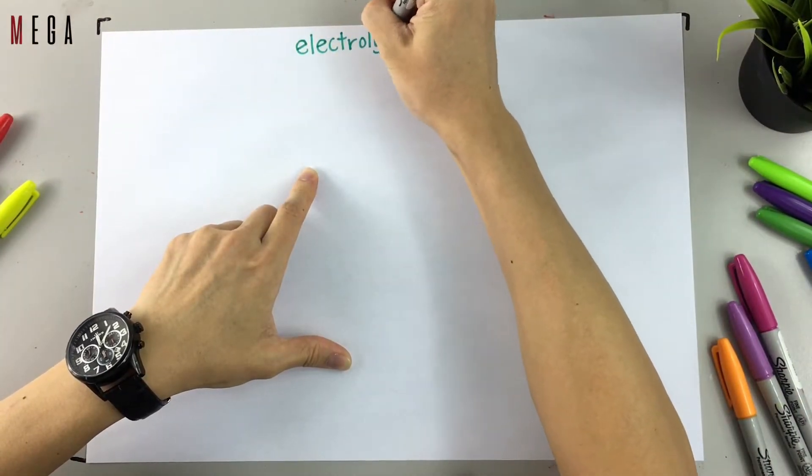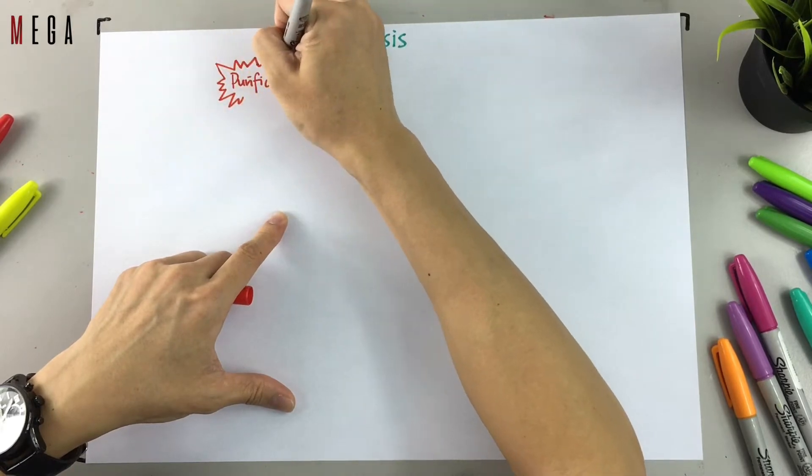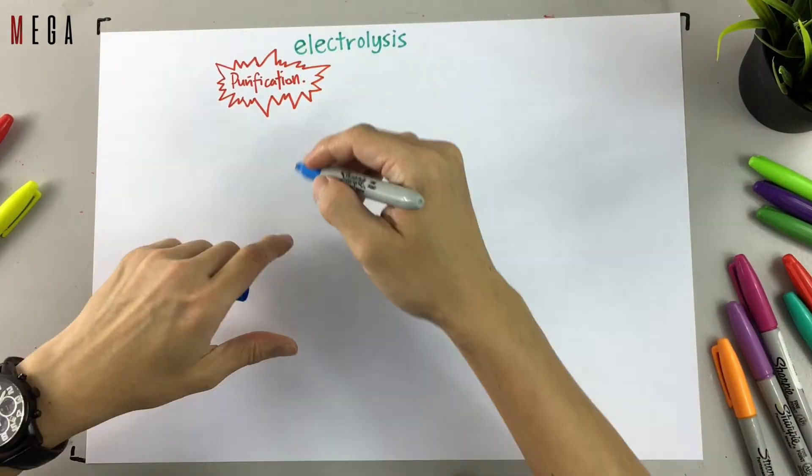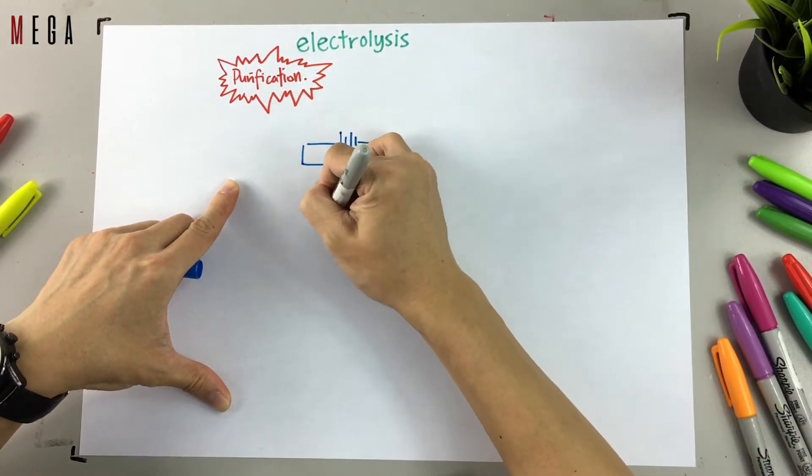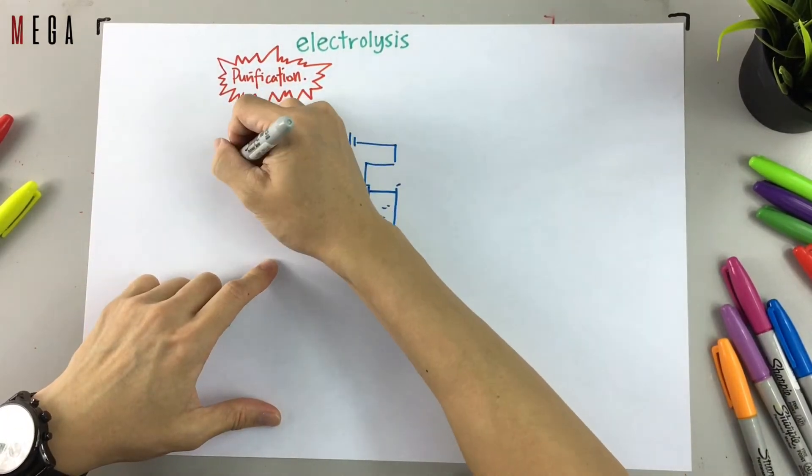Tada! Today we are going to talk about one of the applications of electrolysis which is purification. So what is purification? Basically purification is the methods used to purify an impure metal into pure metal.